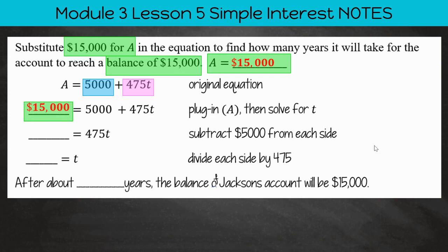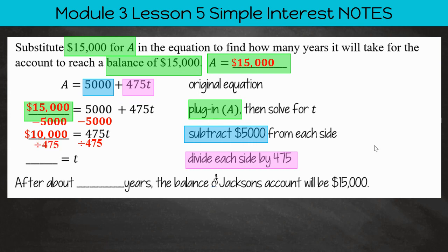So I'm going to take out A and put in $15,000. That's going to equal $5,000 plus 475 T. Now I need to subtract $5,000 from both sides because I'm trying to isolate the T or get the T by itself. So I get $10,000 is equal to $475 T.